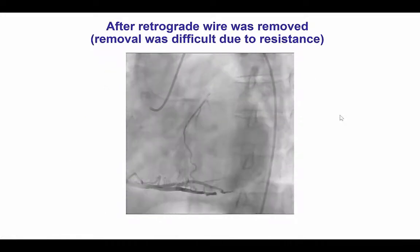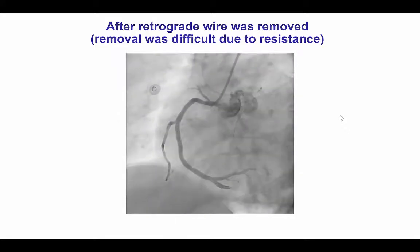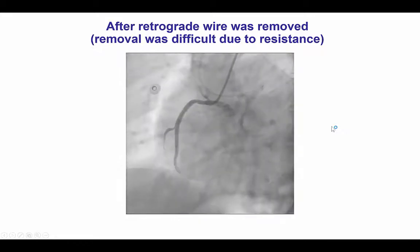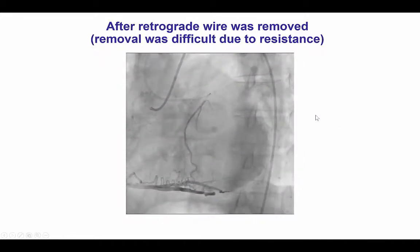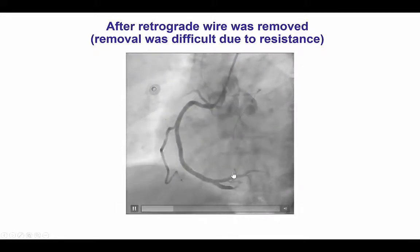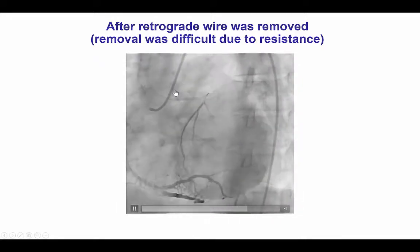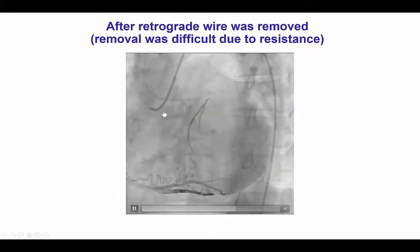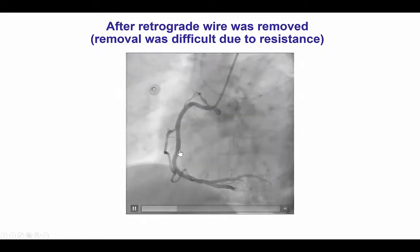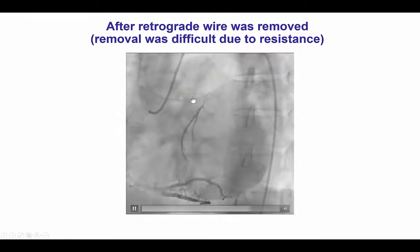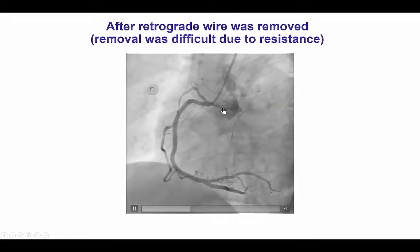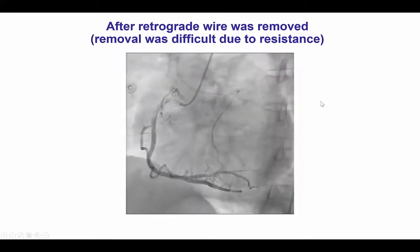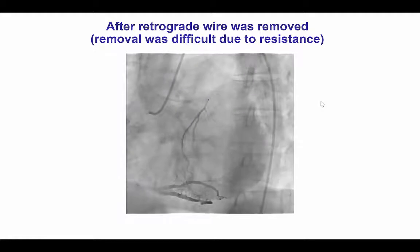We then had to remove the retrograde gear before delivering the stent, which was extremely challenging for many reasons. One is that we did not have a regular externalization wire like the RG3 or the R350 we have today. Also, we could not advance the microcatheter all the way to the antegrade guide catheter because it was not long enough. The lesson learned the hard way is that the best way to remove a retrograde guidewire is to advance the microcatheter all the way to the antegrade guide and then pull the wire, making sure the guides are disengaged from the ostium to avoid ostial injury. This is much easier now with the newer wires such as the RG3 and R350.